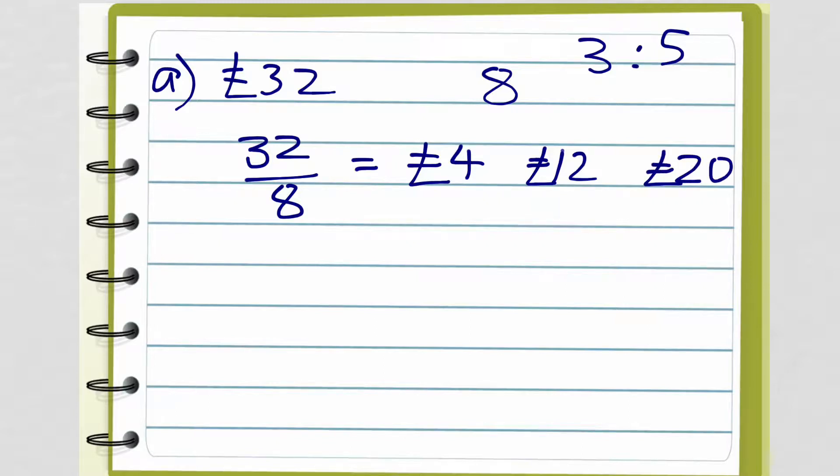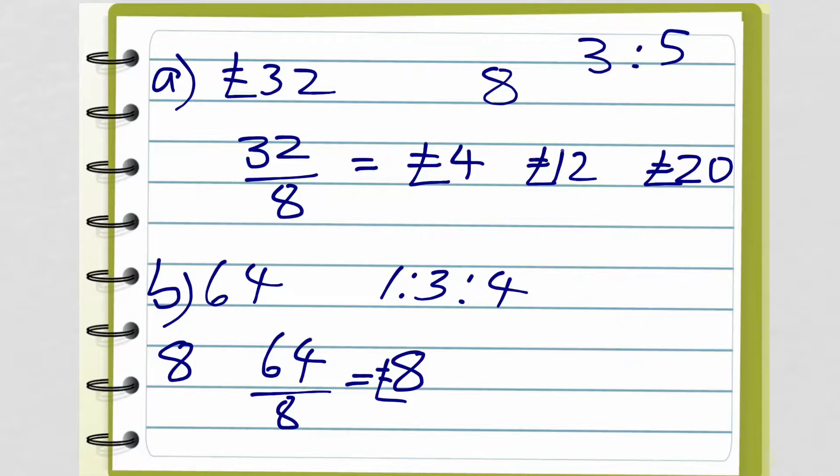Adding up to 32. The second part, B, £64 into the ratio 1 to 3 to 4. Add our ratios together, which is 8. Work out what 64 divided by 8 equals for one part, which is £8. And you multiply each one by 8. So 1 times 8 is £8. 3 times 8 is £24. And 4 times 8 is £32. And hopefully they all add up to £64, which they do.